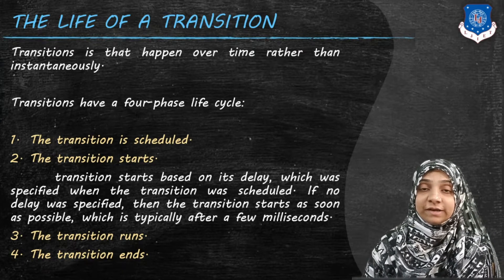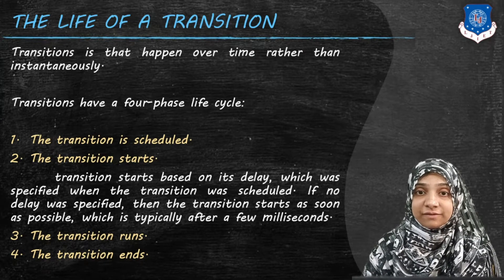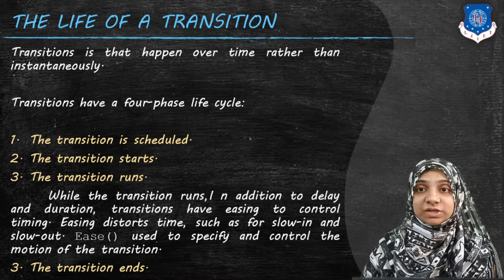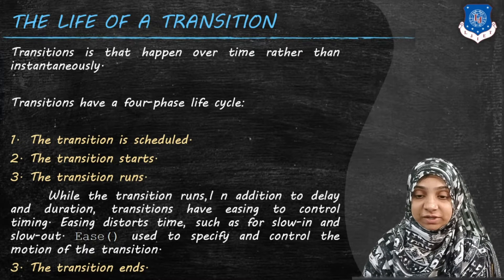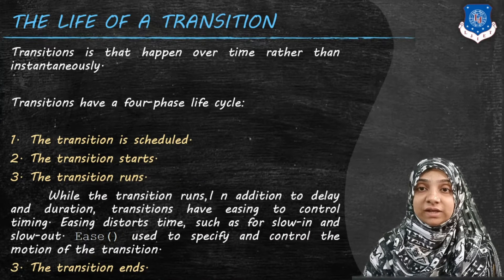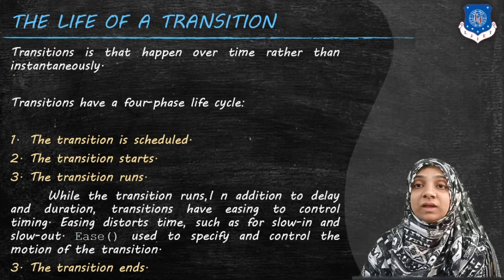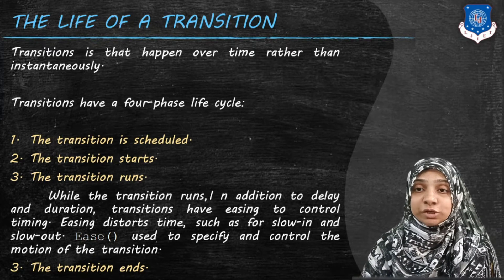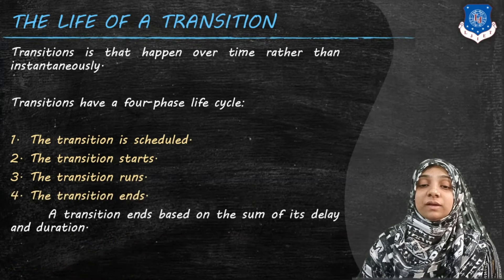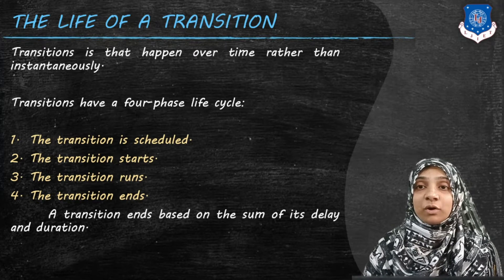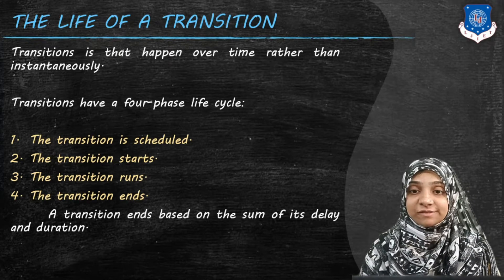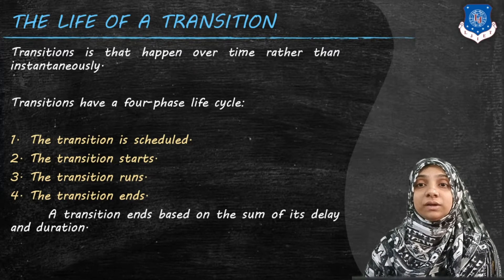A new transition is started based upon its delay. If delay is not specified, the transition starts instantaneously after it is scheduled. If a delay is specified, the transition will wait for that period. While transition is running, in addition to delay we also ease the control of timing — for example, ease can be linear, sine, bounce, or spring, controlling the motion of transition. The transition ends at the sum of delay time plus its duration, after which we can schedule another transition.